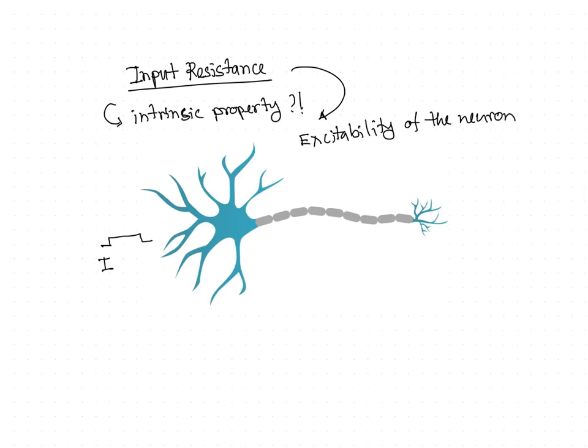Whenever we inject a current, we see if the current is actually beyond the threshold, we would see all-or-none phenomena, which is the action potential. Now this action potential is nothing but a voltage change, or delta change in the voltage. And we know from Ohm's law that voltage is proportional to current.